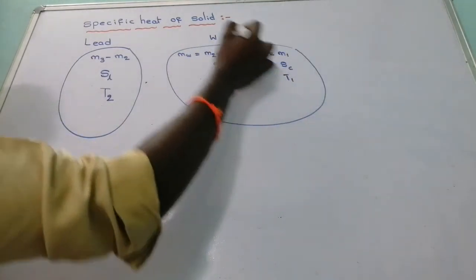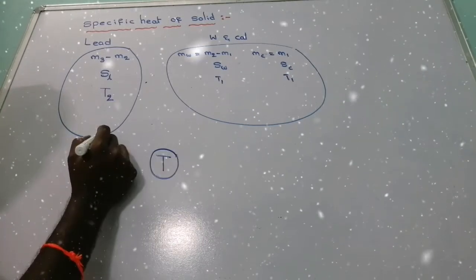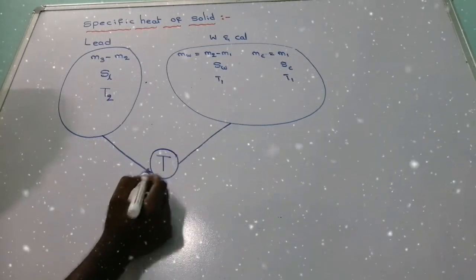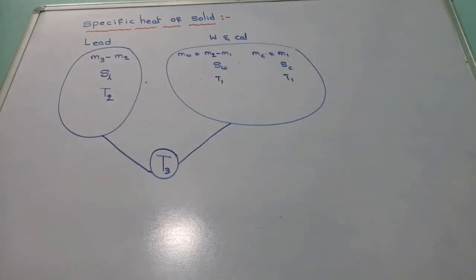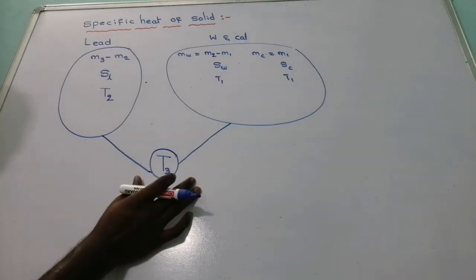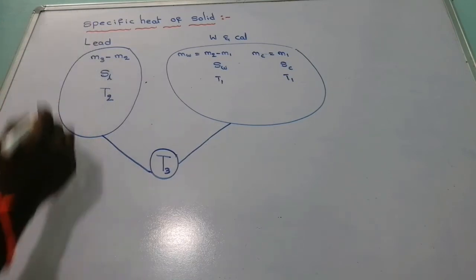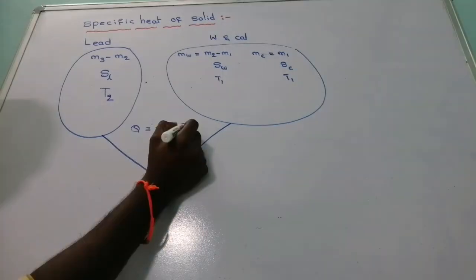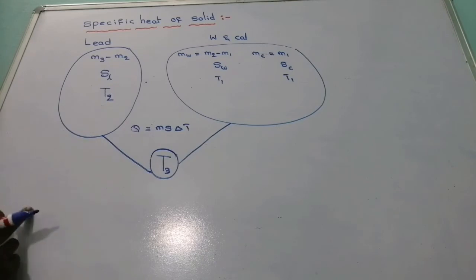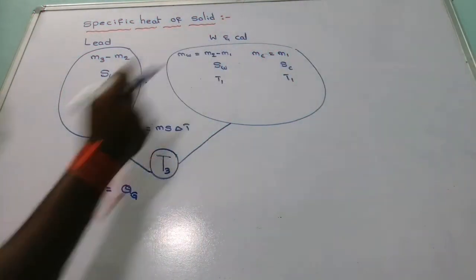When the lead shots are mixed with the calorimeter and water, the resultant temperature is T3. According to the heat principle, the heat lost by the lead shots equals the heat gained by the water and the calorimeter. The equation for heat is Q = m × s × ΔT.